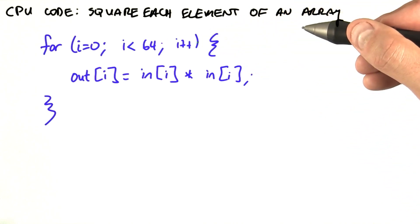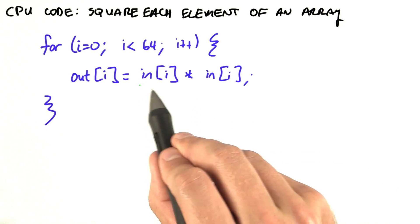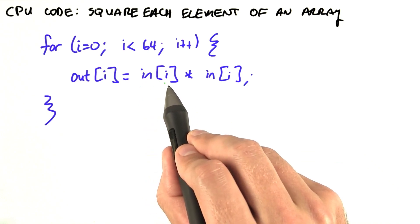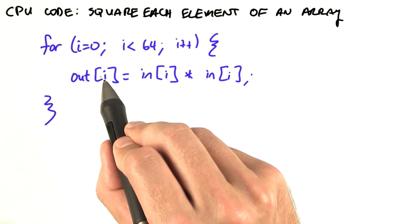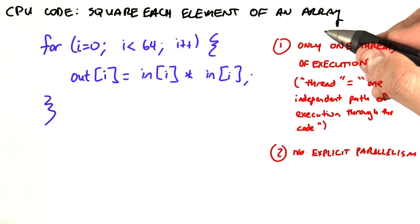What are we going to do on each iteration of the loop? We're going to fetch the input value at array location i, multiply it times itself, and store it into the output array. There's two interesting things to note about this code.